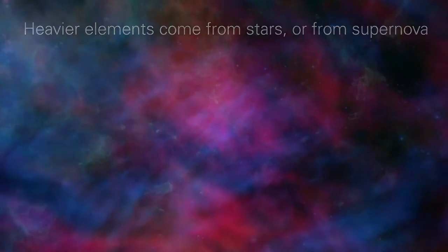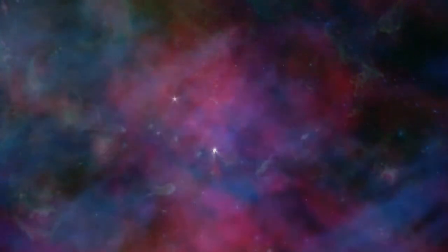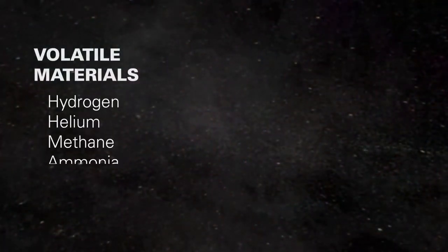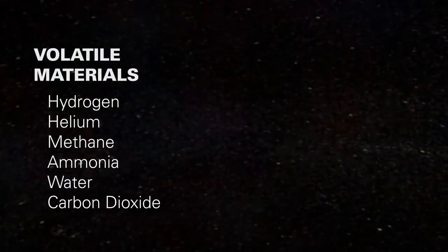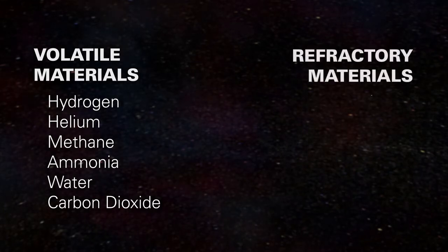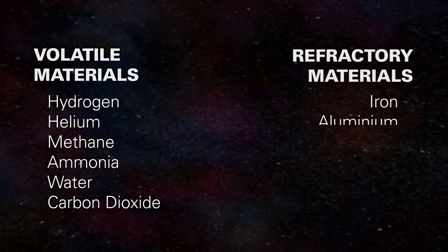Some of the heaviest elements formed in supernova explosions. The nebula consists of both volatile materials, which melt or vaporize at relatively low temperatures, and refractory materials, which generally melt or vaporize at relatively high temperatures.